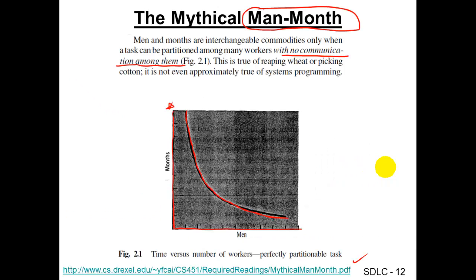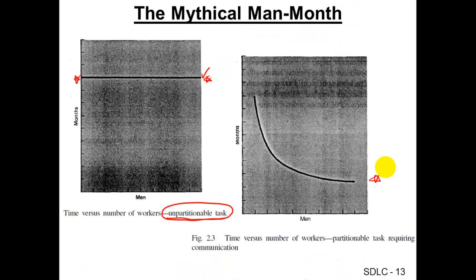Getting more people doesn't help at all in that situation. In practice, in a lot of situations, if you compare the ideal diagram and the practical diagram, they look similar but behave differently. The ideal case runs one way, and the gap between ideal and practical means additional overhead when adding more people — more meetings, more coordination, more communication, or people getting in the way of each other.